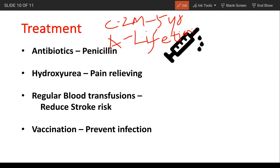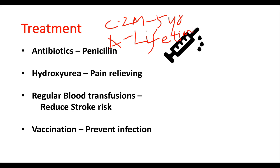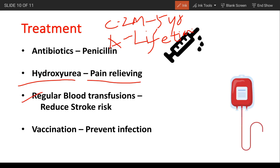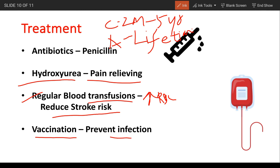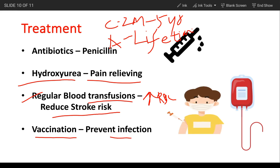Hydroxyurea reduces the frequency of painful crisis. Regular blood transfusions increase the number of normal RBCs in circulation, helping to relieve anemia and prevent high-risk complications like stroke. Lastly, vaccination is important to prevent infections — vaccines such as pneumococcal vaccine and the annual flu shot are important for adults with sickle cell anemia.